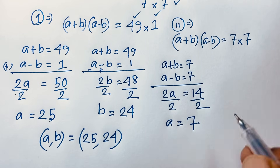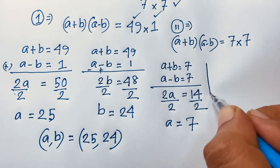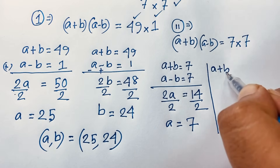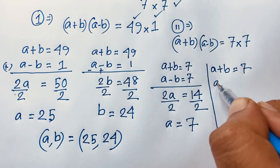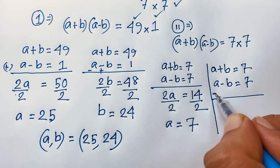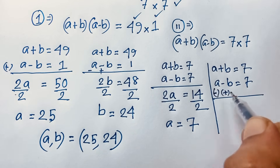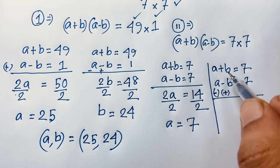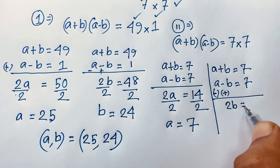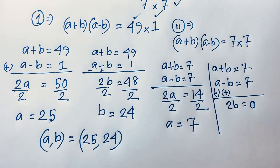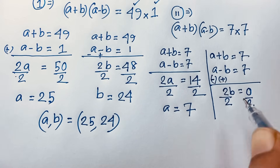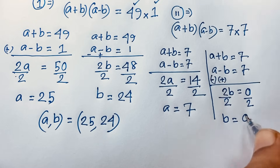For the second case, to find b: a + b = 7 and a - b = 7. Subtracting the equations: a - a = 0, and b + b = 2b. 7 - 7 = 0, so 2b = 0. Dividing both sides by 2 gives b = 0.